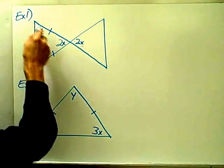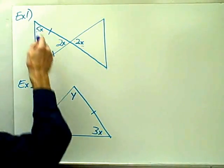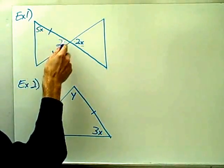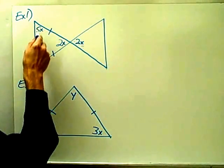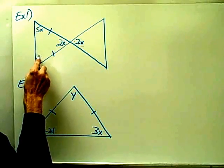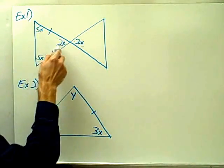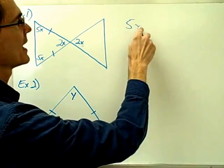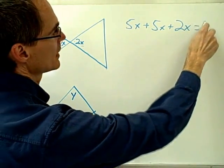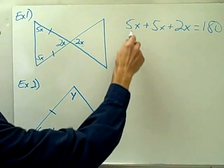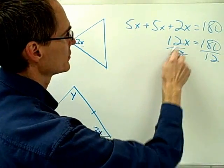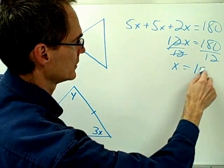I also notice that this triangle is an isosceles triangle because it has those two hash marks to indicate that these two sides are congruent. From the isosceles triangle theorem, the two base angles — the angles opposite the two legs — must be congruent. So I now have expressions for all three angles of this triangle. Using the triangle sum theorem, I add those three angles and set them equal to 180 degrees: that gives 12x equals 180, so dividing by 12, x equals 15.